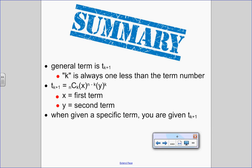To summarize: we've seen several examples applying the general term of the binomial theorem to find specific terms, middle terms, or the constant term. The general term is t_{k+1}, not t_k. k is always one less than the term number. The general term is nCk · x^{n−k} · y^k, where x is the first term and y is the second term. This formula will be given on your formula sheet.